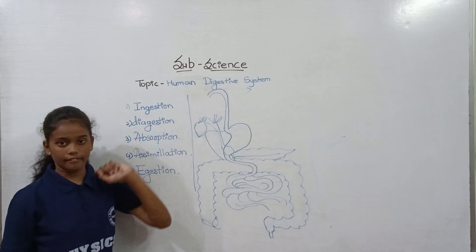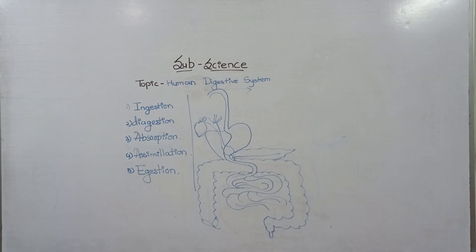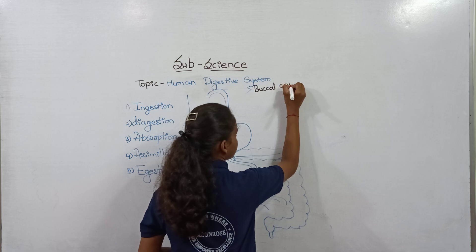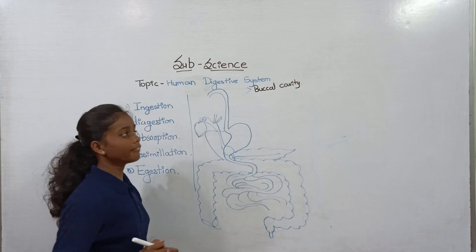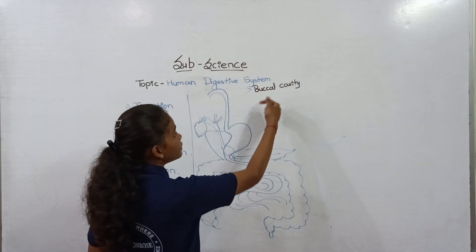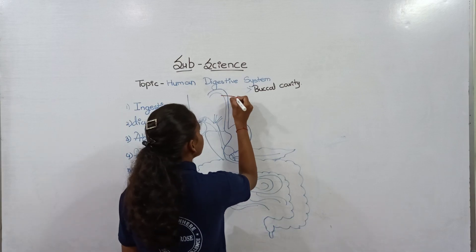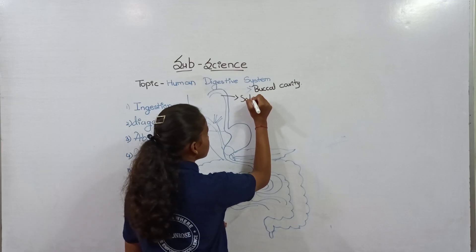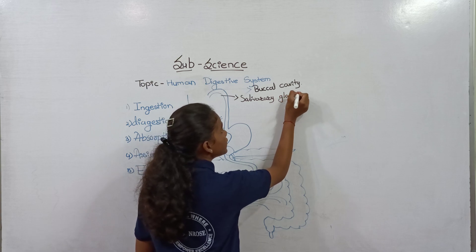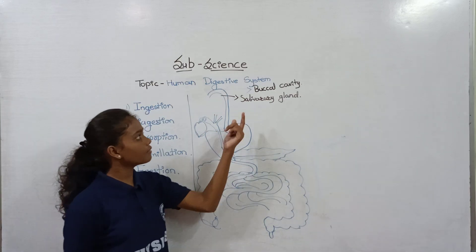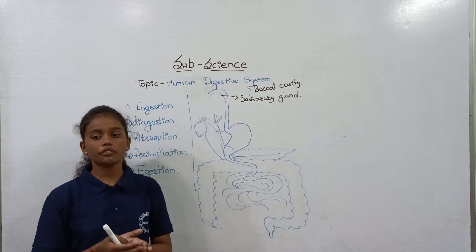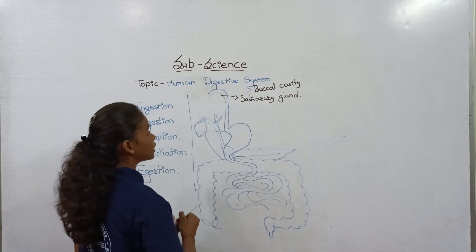The first part is the buccal cavity. The use of the buccal cavity is chewing food properly to digest it properly. The food is chewed and then mixed with saliva. The salivary gland secretes saliva, which gets mixed with the food and helps push the food through the food pipe.